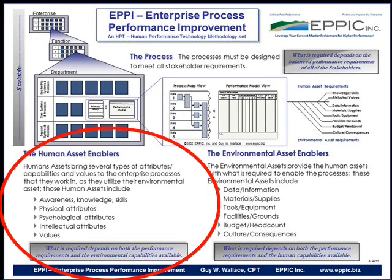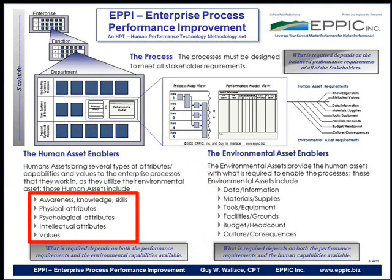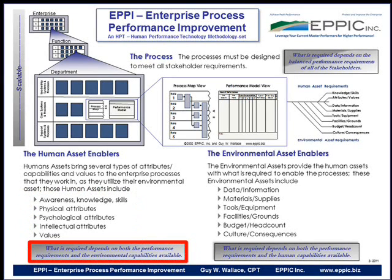Let's look at the human asset enablers. The human assets bring to the process their awareness, knowledge, and skills. They also bring physical attributes, psychological attributes, intellectual attributes, and personal values — these are either conducive to the needs of the process or they are not. What's required depends on both the performance requirements of the stakeholders and the environmental capabilities available.